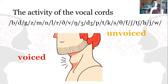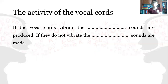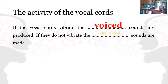Pronounce the sound B. What's happening here? Do you feel anything? Then pronounce the sound P. Can you feel the difference? If the vocal cords vibrate, voiced sounds are produced. If they don't vibrate, then unvoiced sounds are produced. These are the voiced consonant sounds in English, and these are the unvoiced consonant sounds in English.